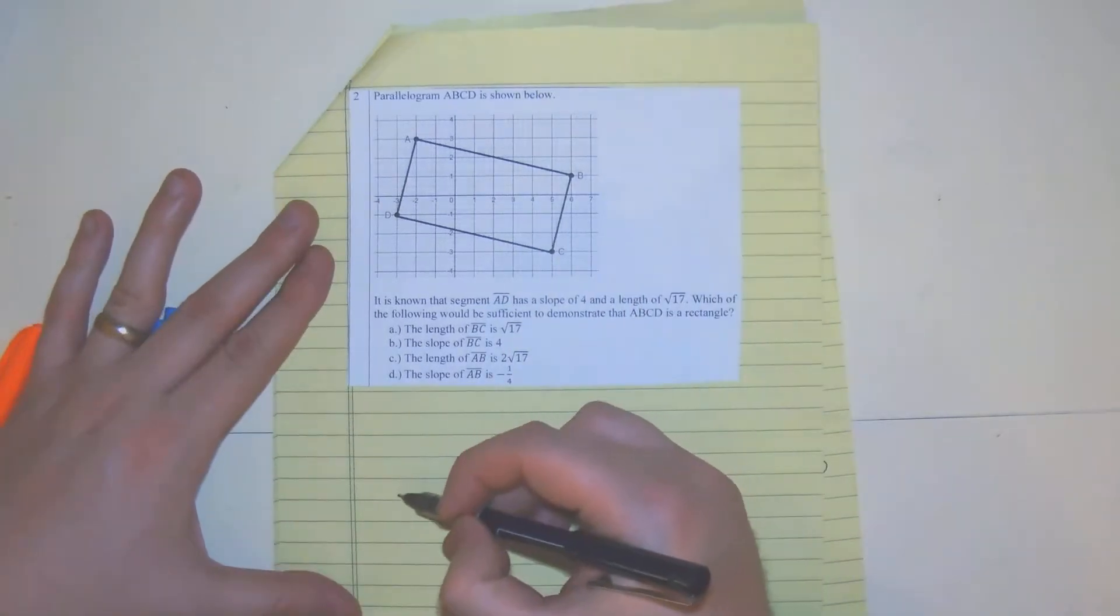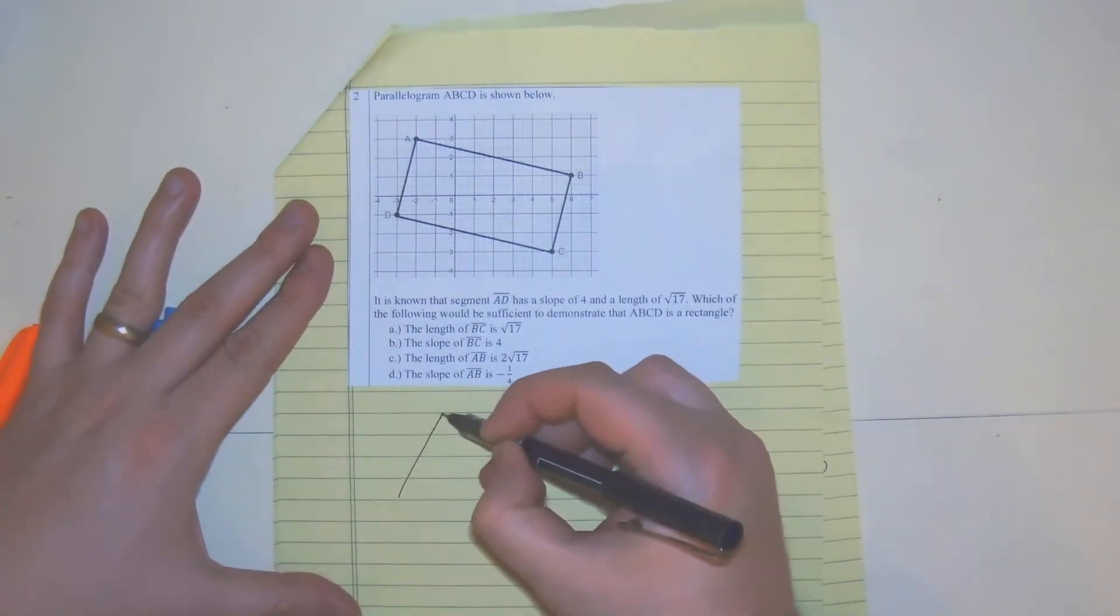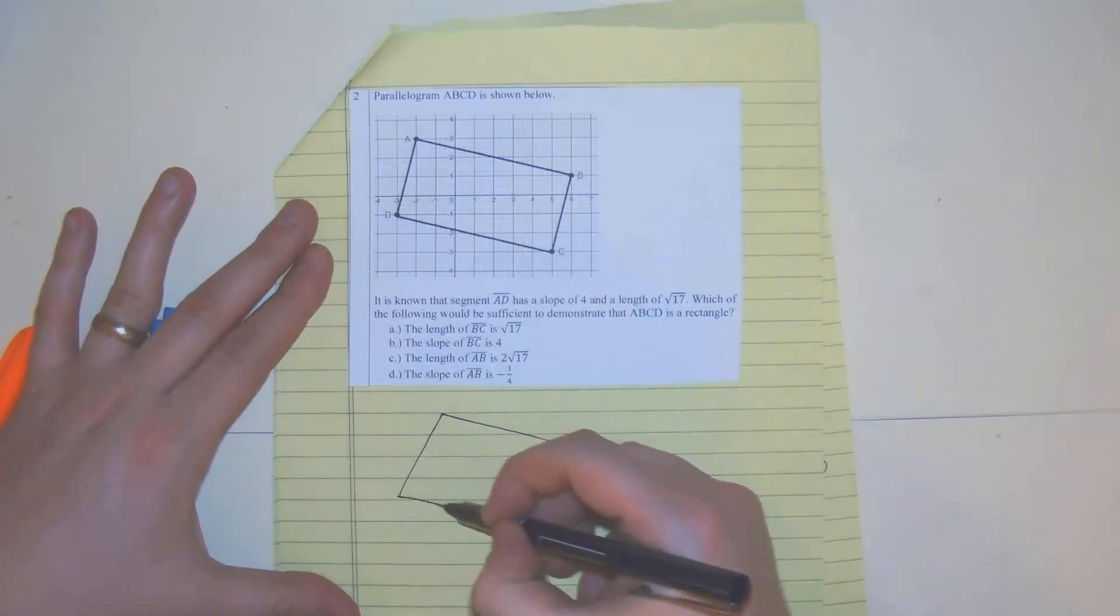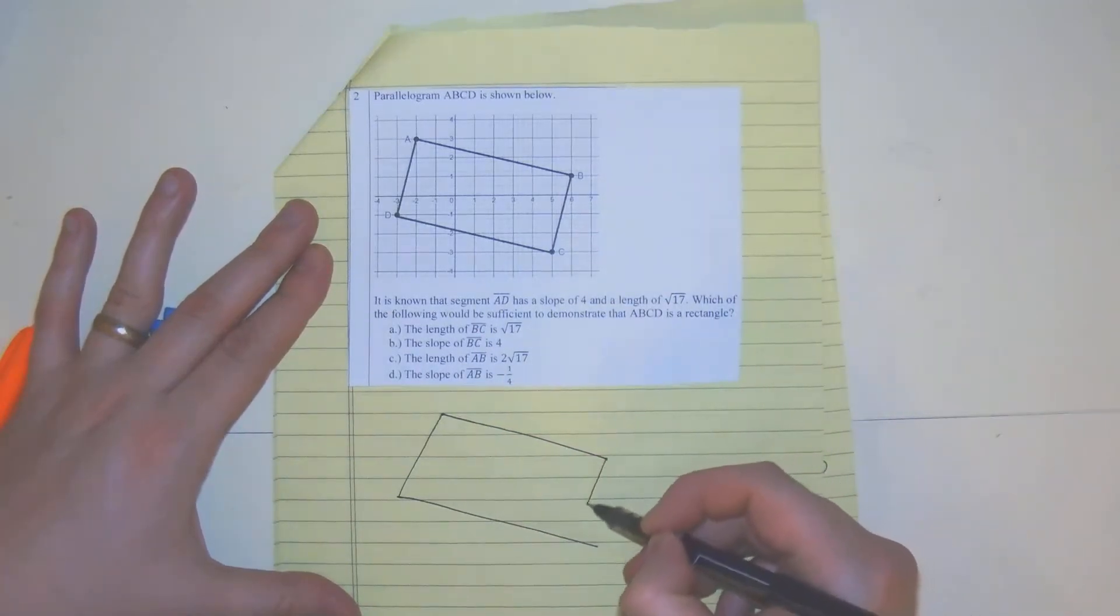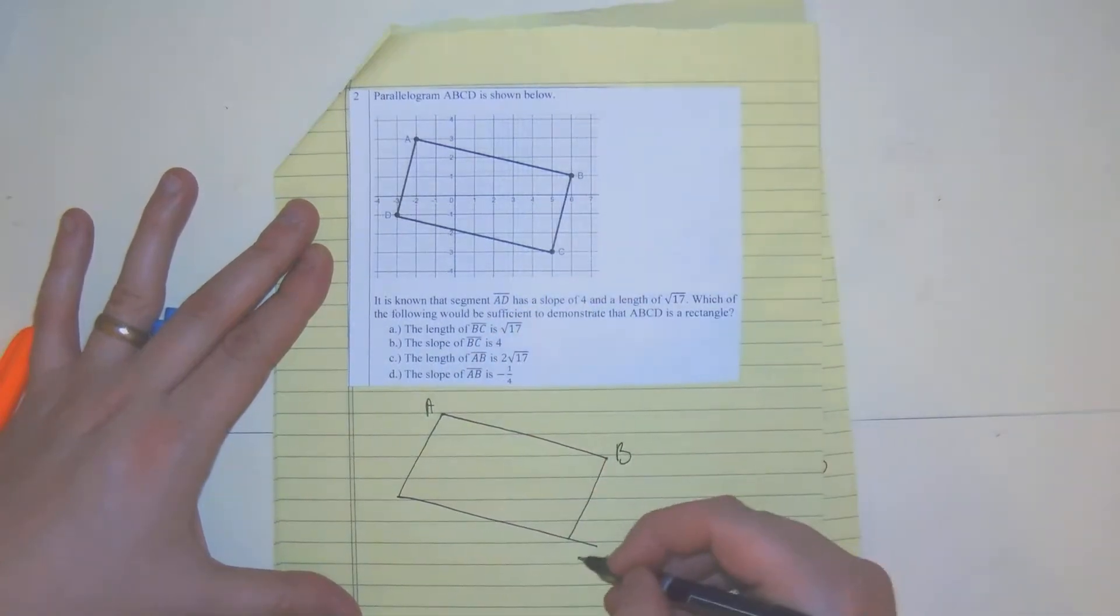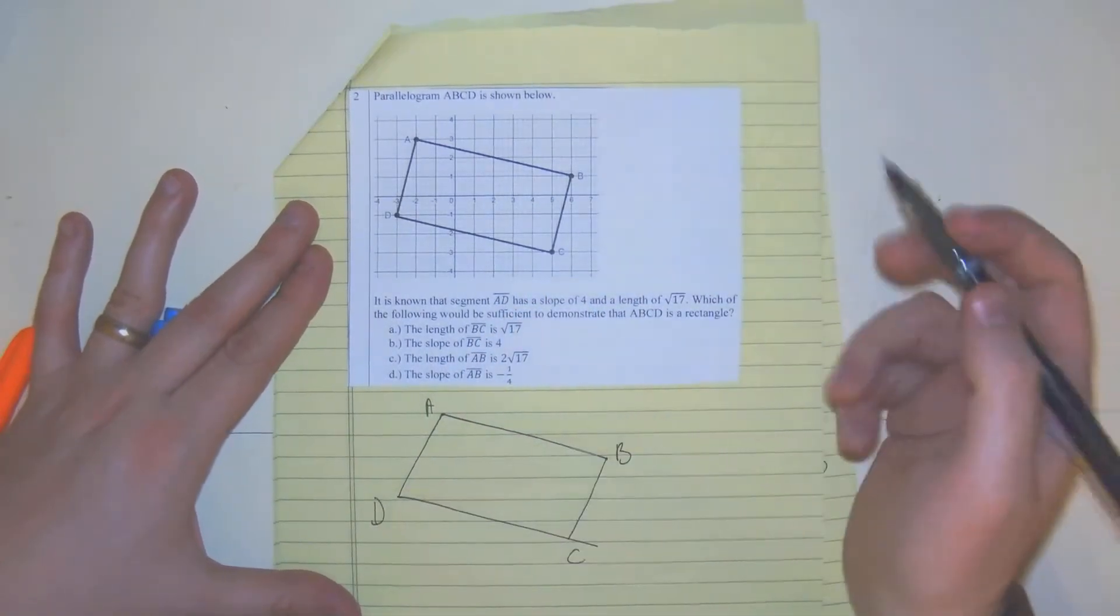So I'm going to draw something very similar to it. It doesn't have to be perfect, but we want to have something in front of us so we can work with it. Because this is just seeing, do we know what a rectangle is?